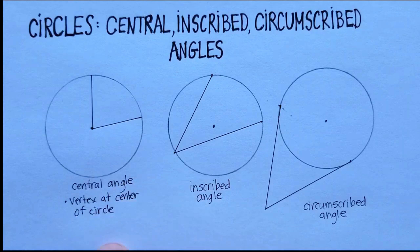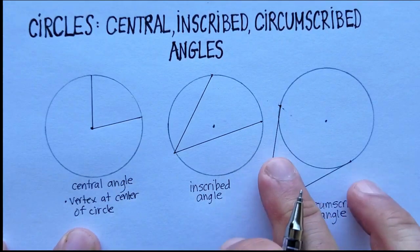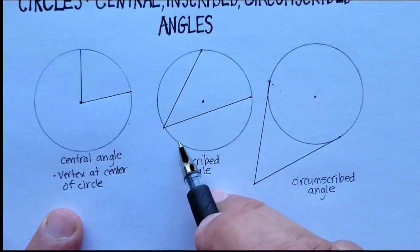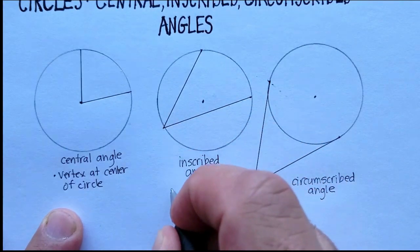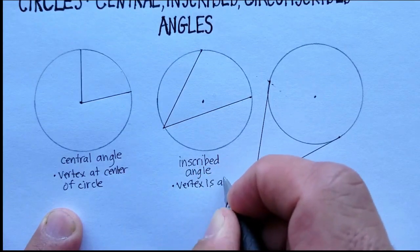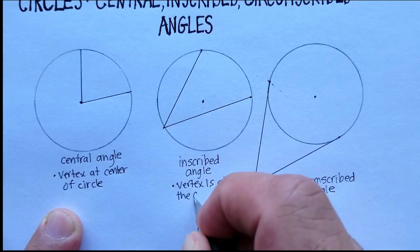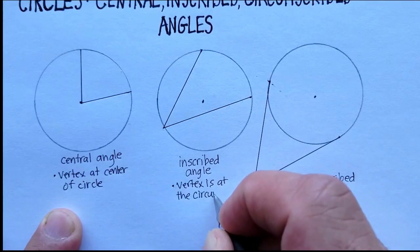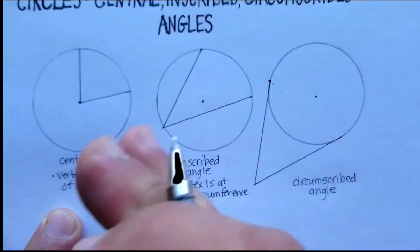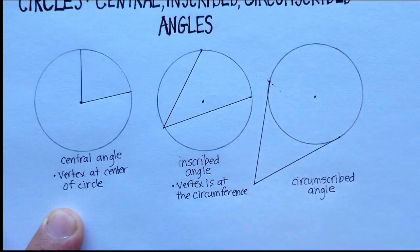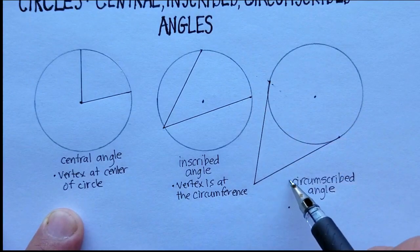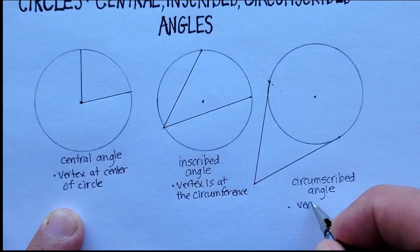That is the defining feature of a central angle compared to the other two types. For an inscribed angle, the vertex is actually on the circumference of the circle — the outside edge, or perimeter, though for circles we call it a circumference. For a circumscribed angle, the vertex is located outside the circle.